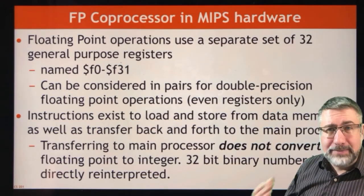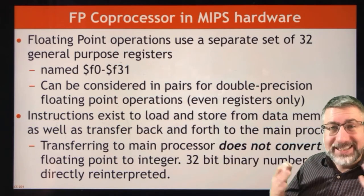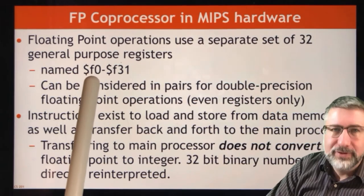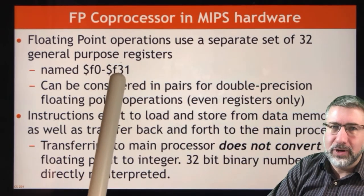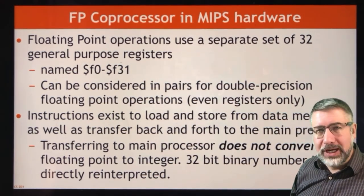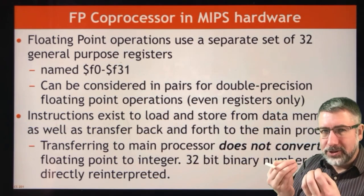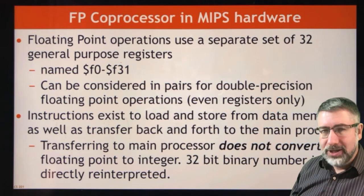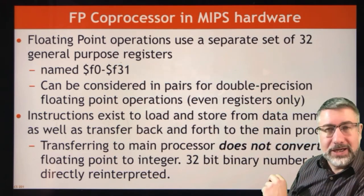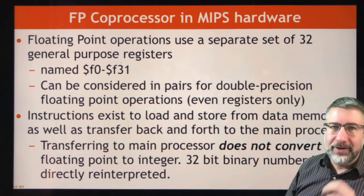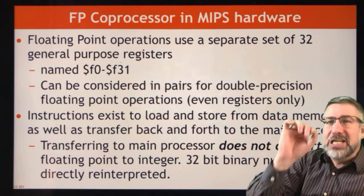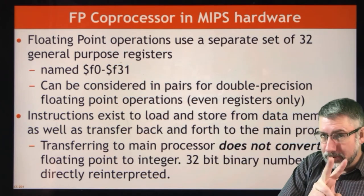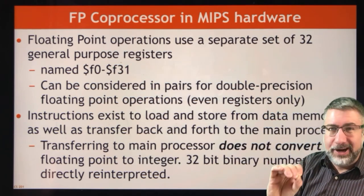In MIPS, there are 32 additional floating point registers called F registers, from F0 to F31. Because floating point numbers can be represented as single precision or double precision, these registers are allocated in pairs. You can either look at each individual register separately, or look at pairs of double precision registers from an even to the subsequent odd — so F0 and F1 are a pair for double precision, F2 and F3 are a pair, and so on.